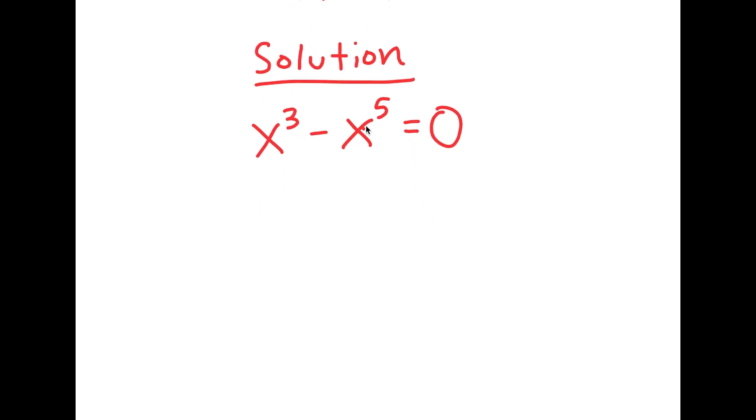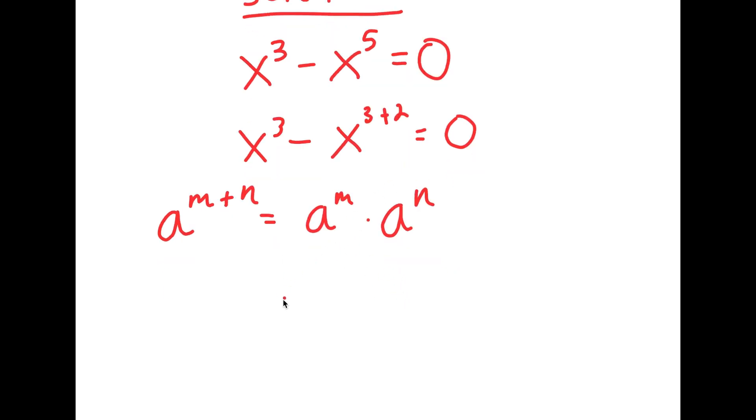Now from here, I can rewrite x to the power of 5 as x to the power of 3 plus 2. And if I have something in the form a to the power of m plus n, this is equal to a to the power of m times a to the power of n. So x to the power of 3 plus 2 is going to equal x to the power of 3 times x to the power of 2.